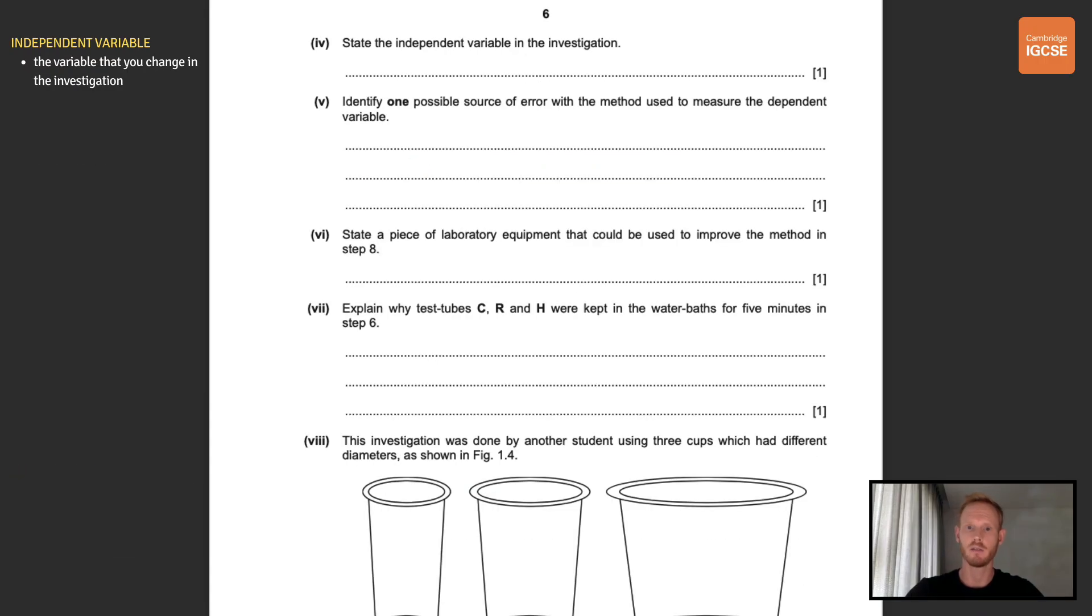Next, you need to state the independent variable in the investigation. The independent variable in any investigation is the variable that you manipulate, control, or vary in order to explore its effects. So in this case, the independent variable is temperature. Then identify one possible source of error with the method used to measure the dependent variable. So the dependent variable is the variable that changes as a result of us manipulating the independent variable. In other words, it's the outcome that we're interested in measuring, in this case, dough height.